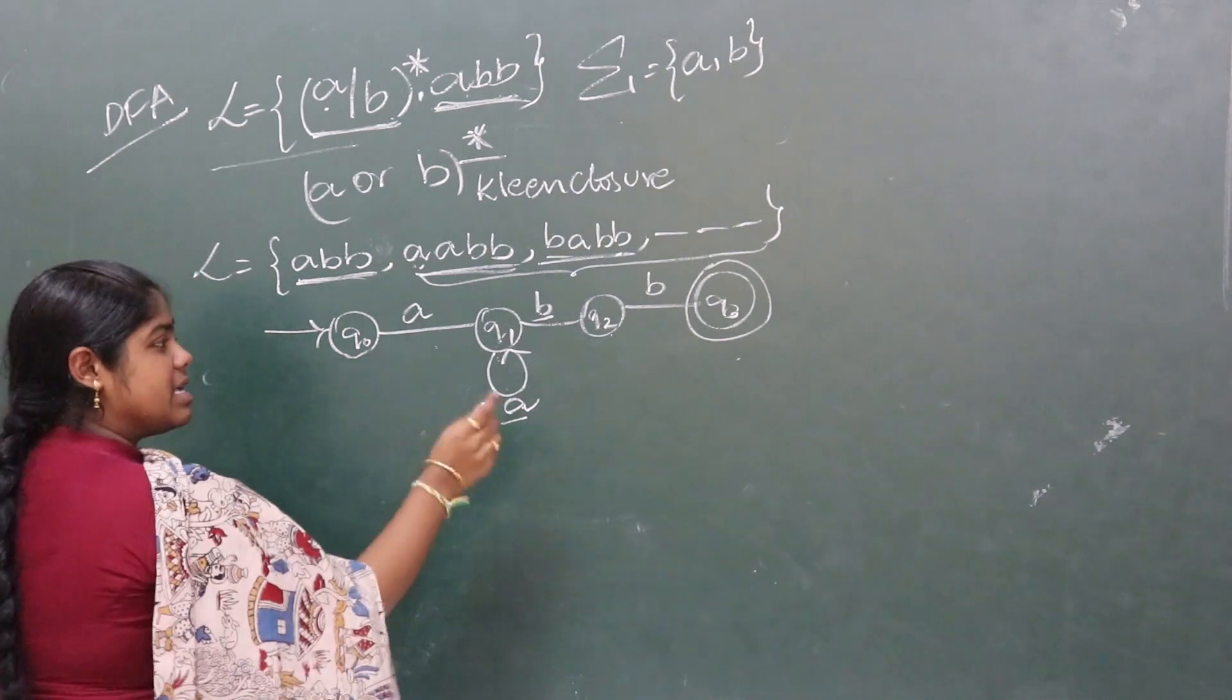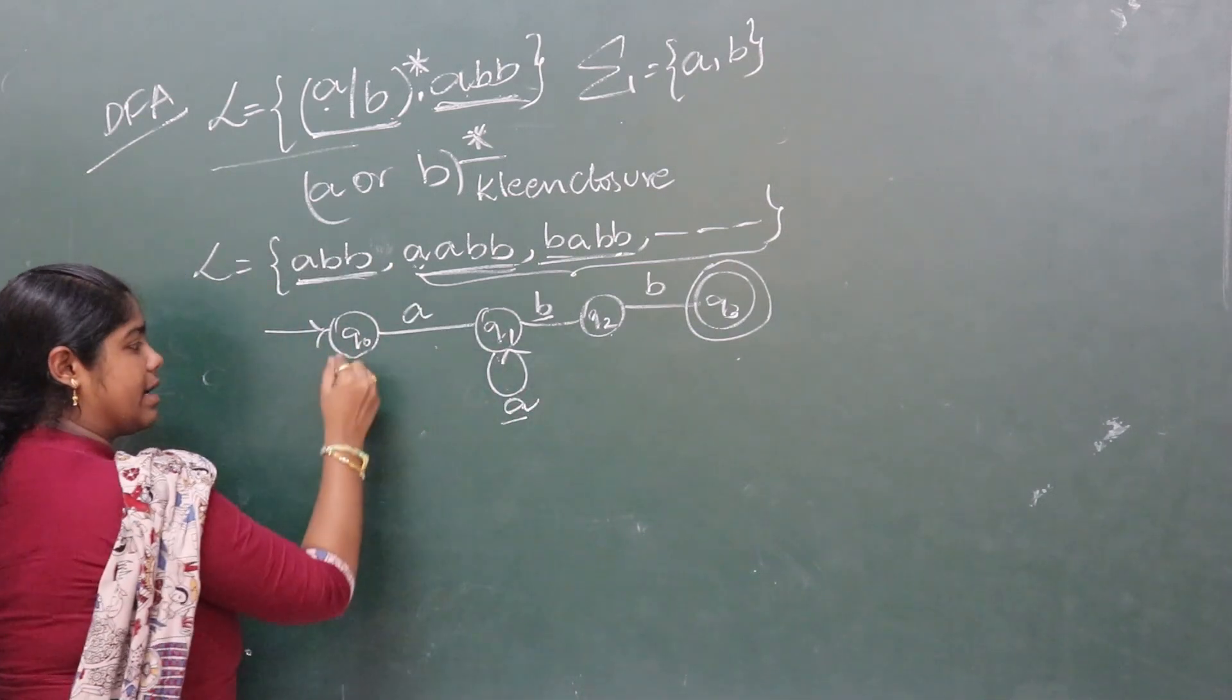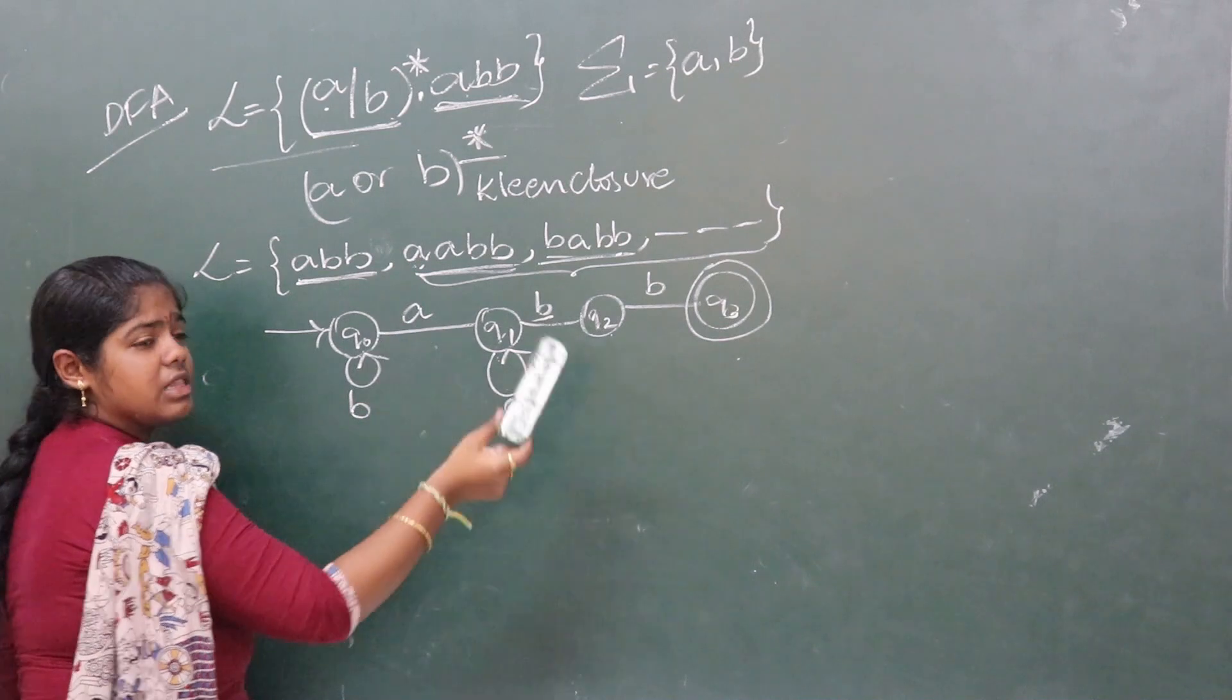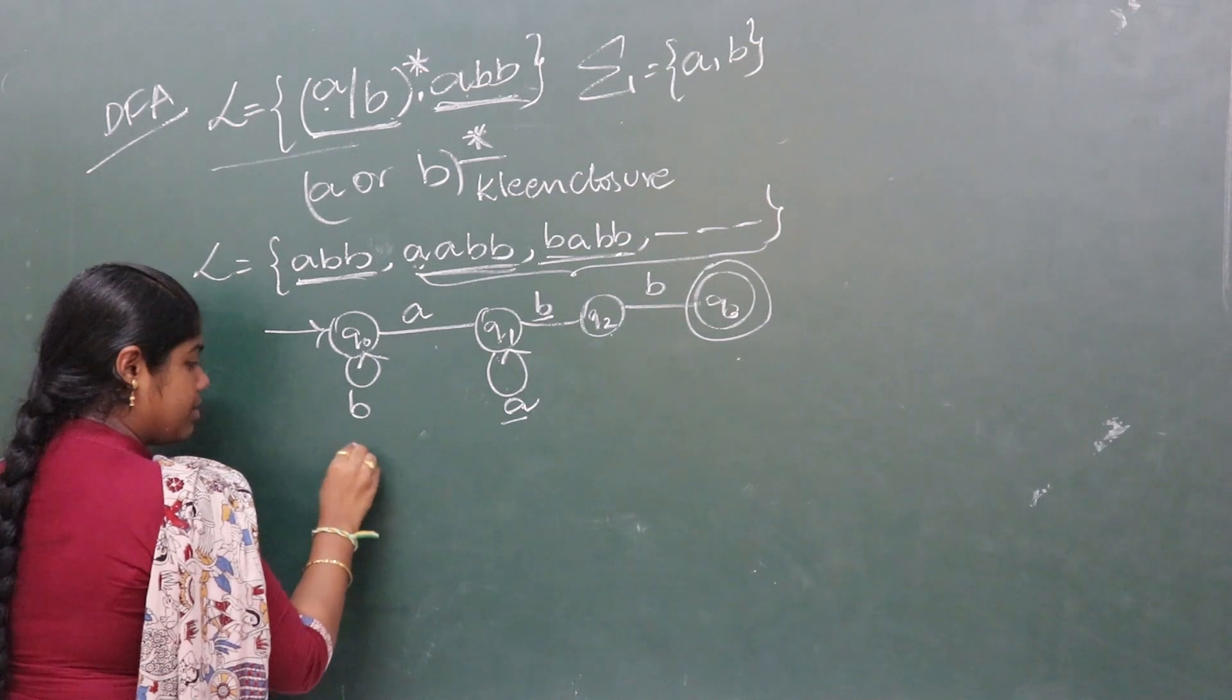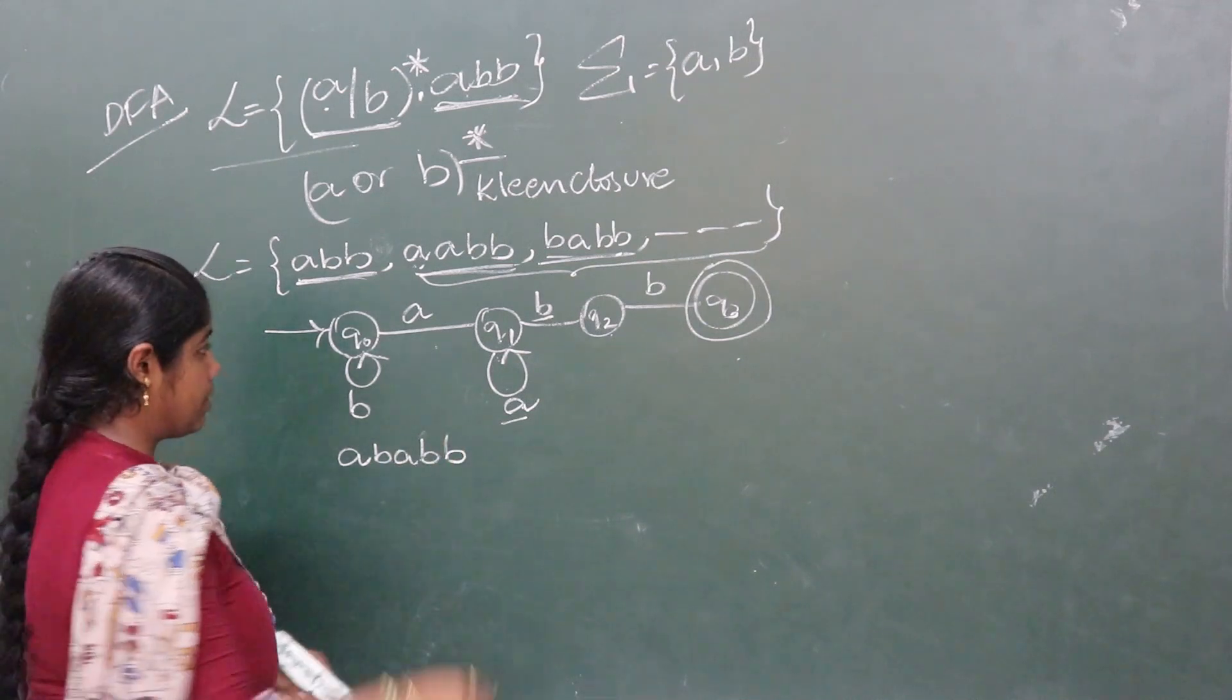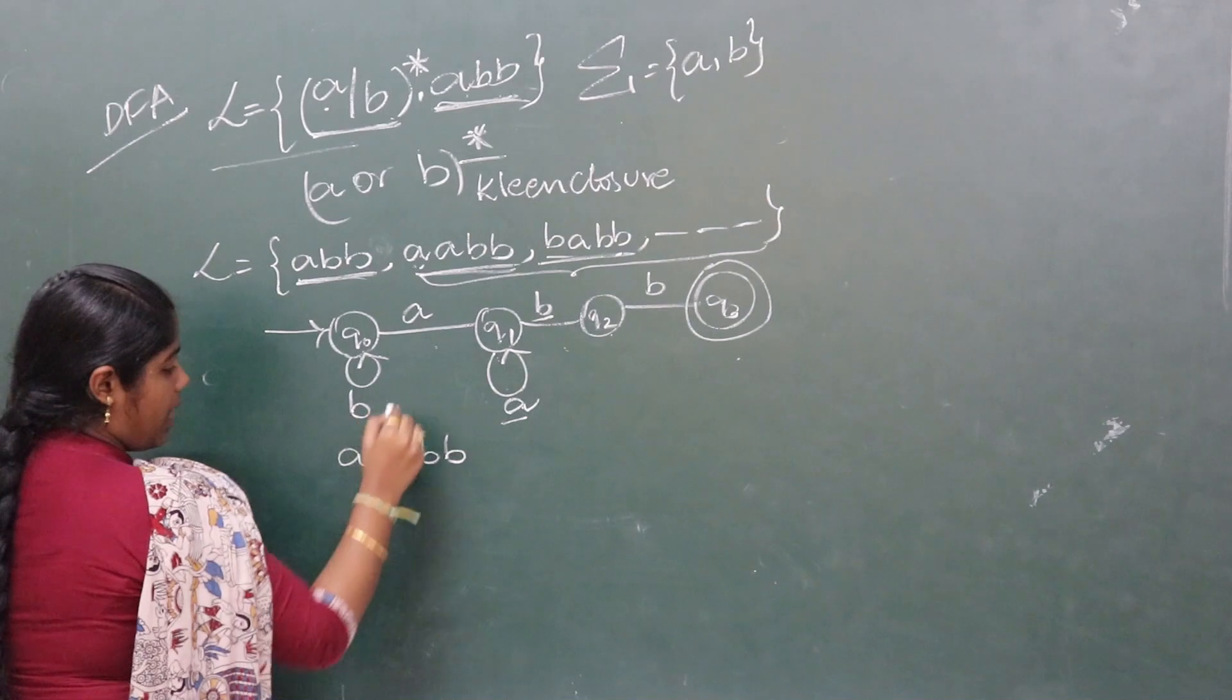Next, consider BABB. Let us take a self loop on Q0 with B. Now B any number of times concatenated with ABB gives BABB, which is satisfied.